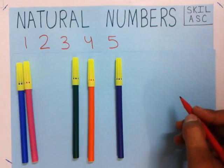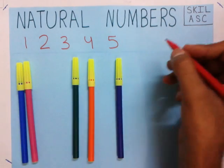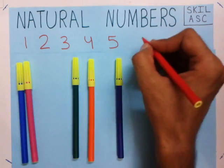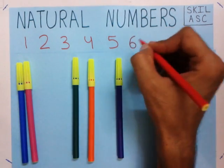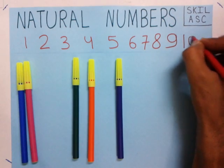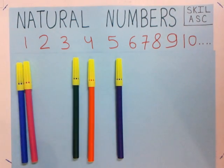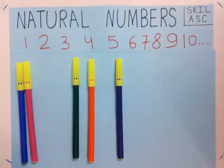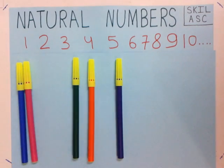If I put more colors here, I would have used more numbers. So if I have more colors, I will use more numbers as 6, 7, 8, 9, 10, and so on. So these are the numbers which we have used for counting — the numbers which help us while counting. These numbers which help us while counting are called natural numbers.